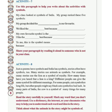Now activity 7. Activity 7 is a group activity — it is a class activity — about which symbol is your group's favorite symbol. Since we are not in a group and we are not in the class, we will go ahead.